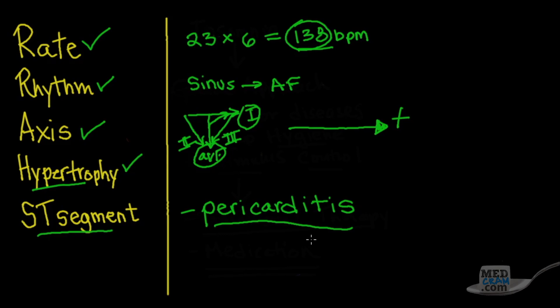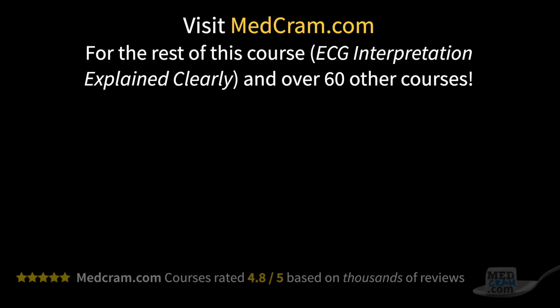So the summary for this EKG is pericarditis, with a heart rate of 138, sinus slash atrial fibrillation, mild left axis deviation, and no signs of hypertrophy. Join us for more EKGs — practice makes perfect. Thanks for joining us.